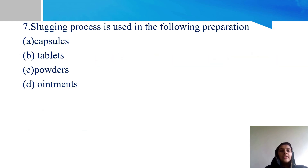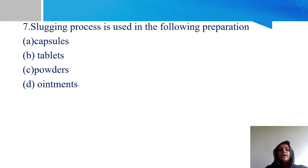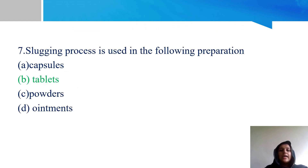Seventh question: slugging process is used in the following preparations. Options: A - capsules, B - tablets, C - powders, and D - ointments. Option B - tablets - is the right answer. There are three methods of tablet preparation: wet granulation, dry granulation, and direct compression. Under dry granulation, we have slugging and roller compaction.